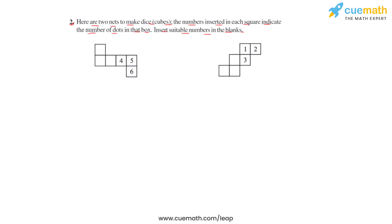We can answer this question from the fact that opposite faces of a dice always have a total of seven dots on them. For example, if we consider this face which consists of four dots, the face which is going to be opposite of this one must have three dots to make the count of dots a total of seven.